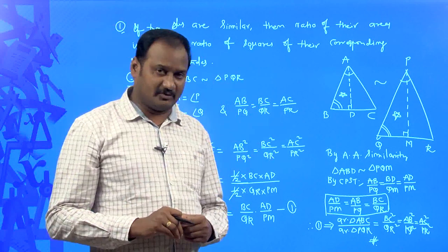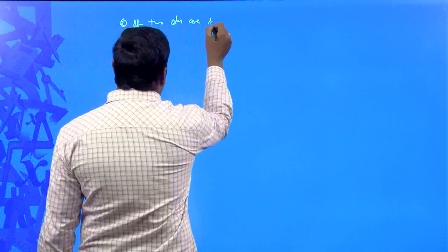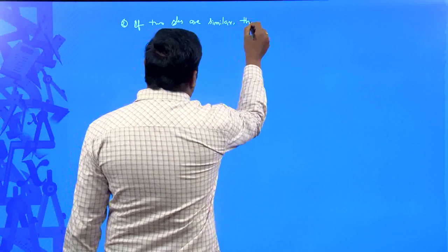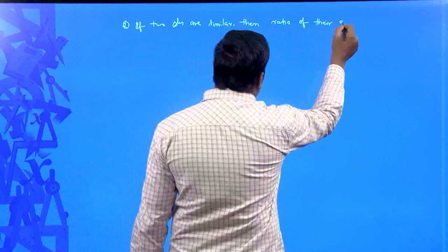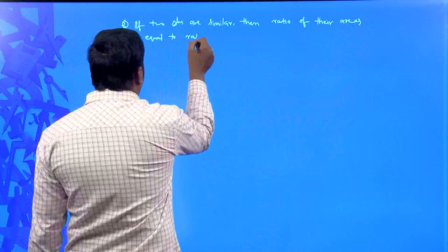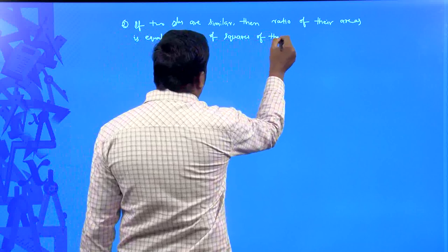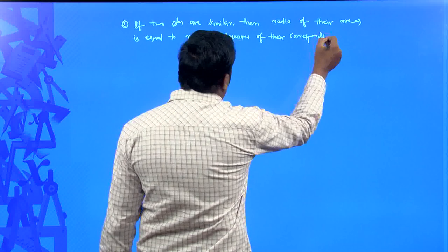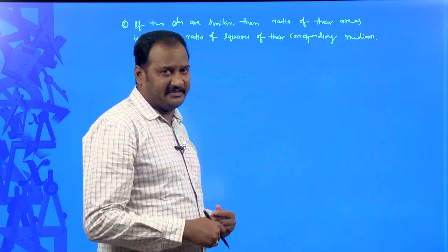Coming to the next one: if two triangles are similar, then ratio of their areas is equal to ratio of squares of their corresponding medians.